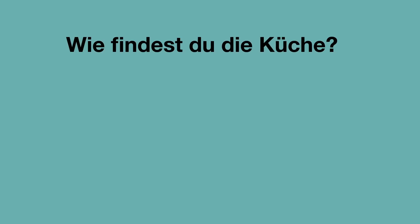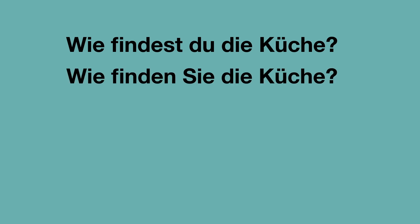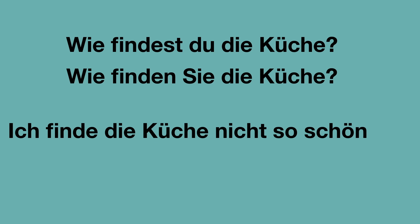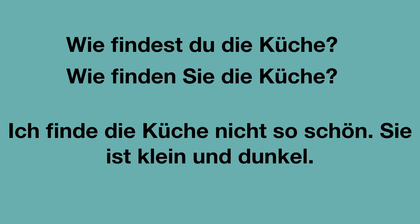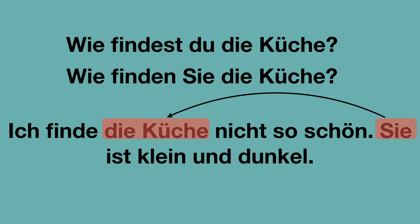Wie findest du die Küche? How do you find the kitchen? Oder in der Sie-Form: Wie finden Sie die Küche? Und die Antwort, zum Beispiel: Ich finde die Küche nicht so schön. Sie ist klein und dunkel. 'Sie' refers to 'die Küche' — it literally means 'she', and since the word Küche is feminine, the correct pronoun is 'sie'. So it literally translates to: I find the kitchen not so beautiful, she is small and dark. Hell — das Gegenteil — dunkel. Hell means bright, dunkel means dark.